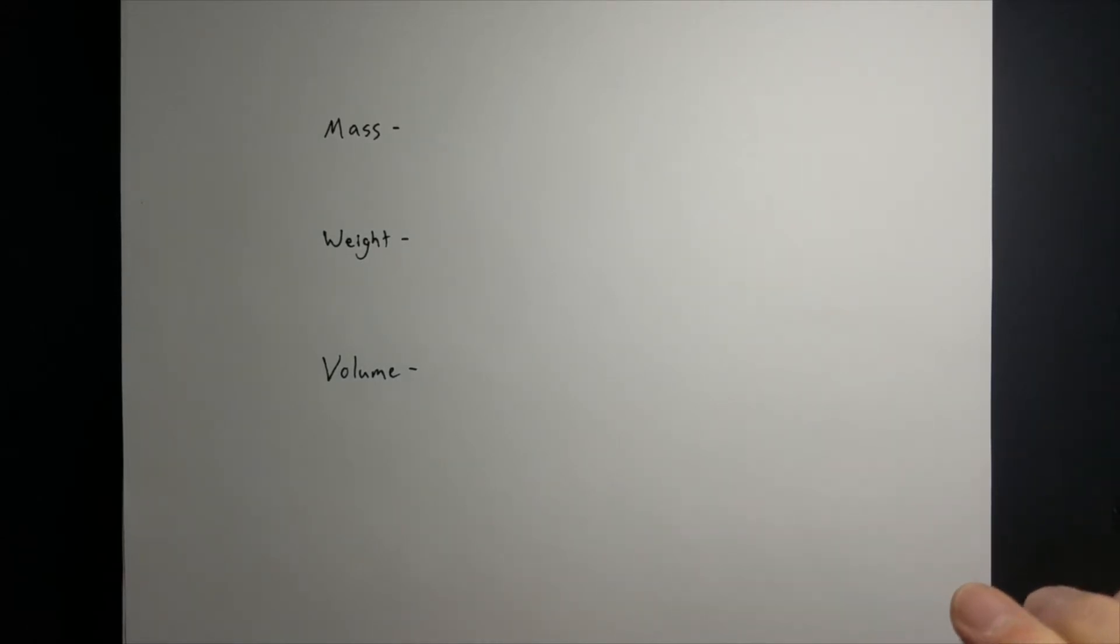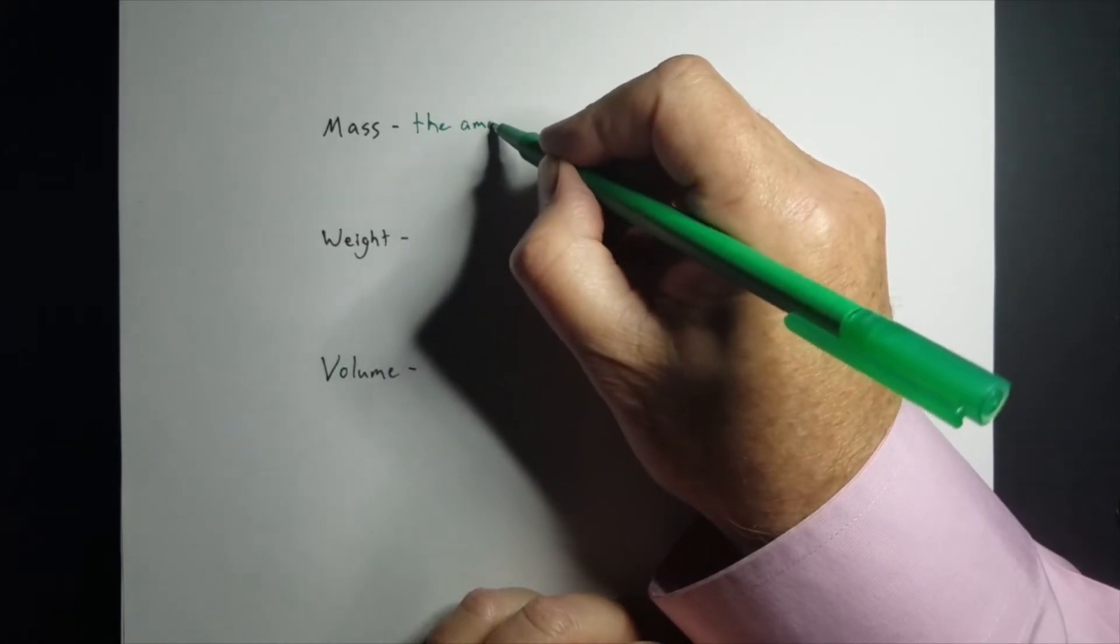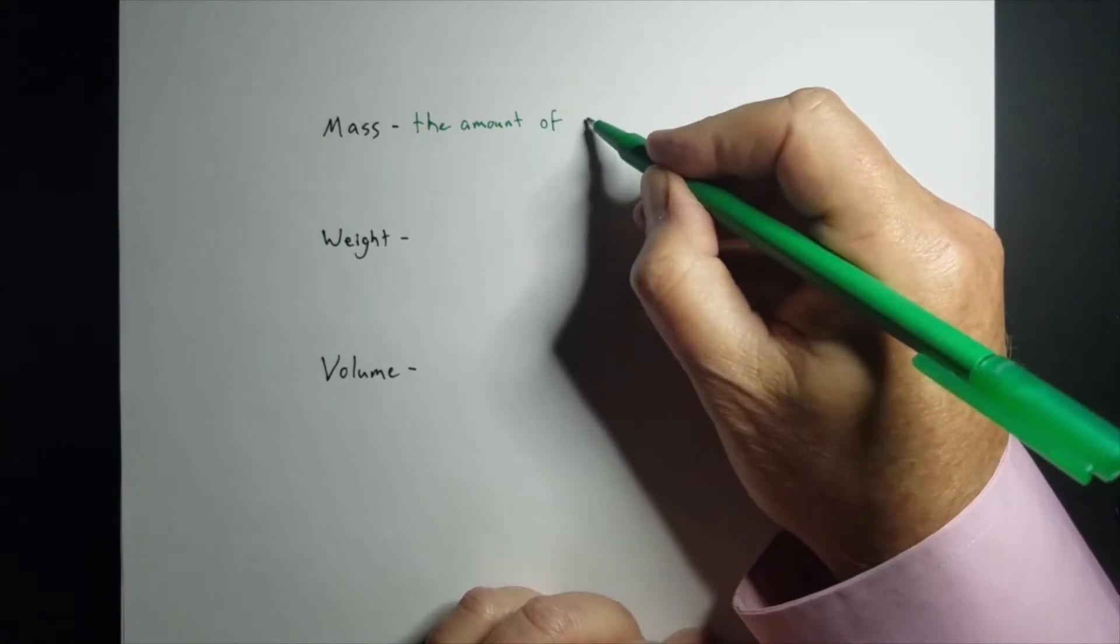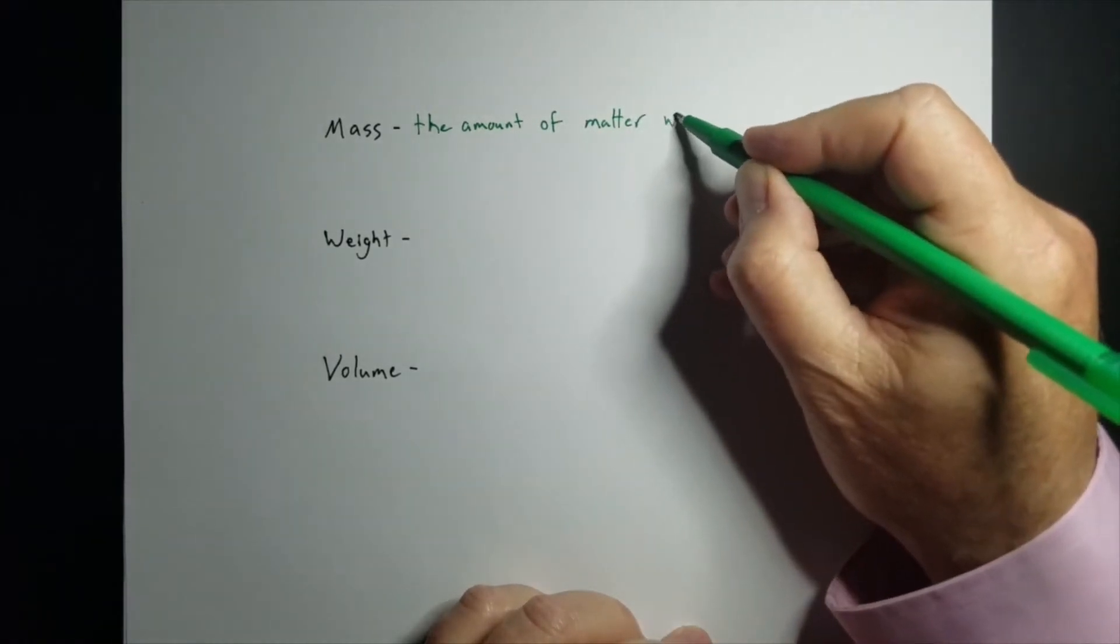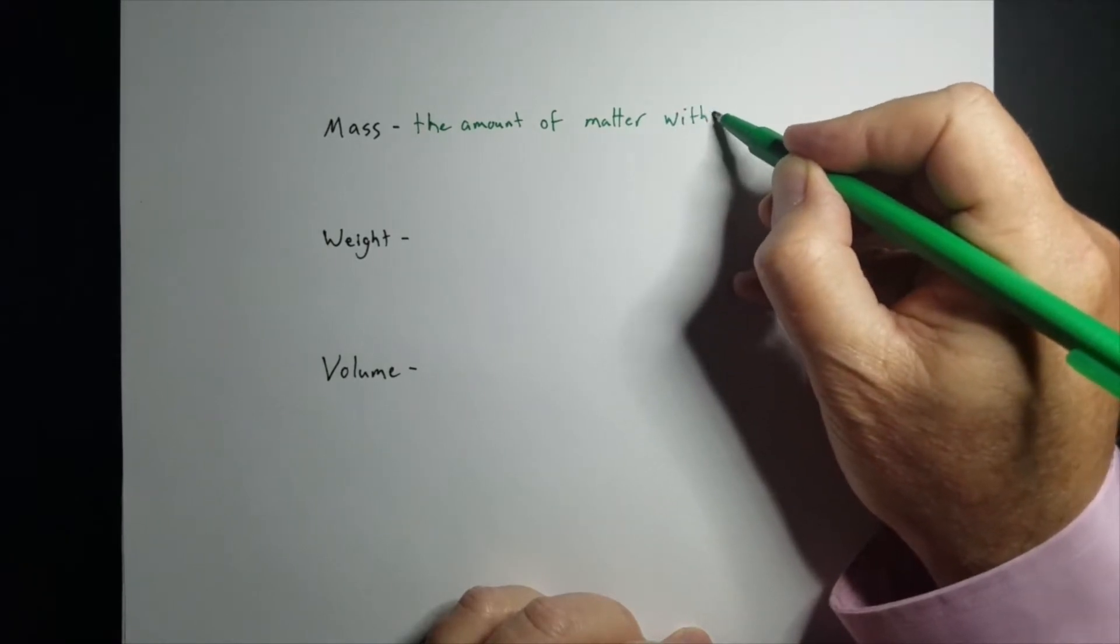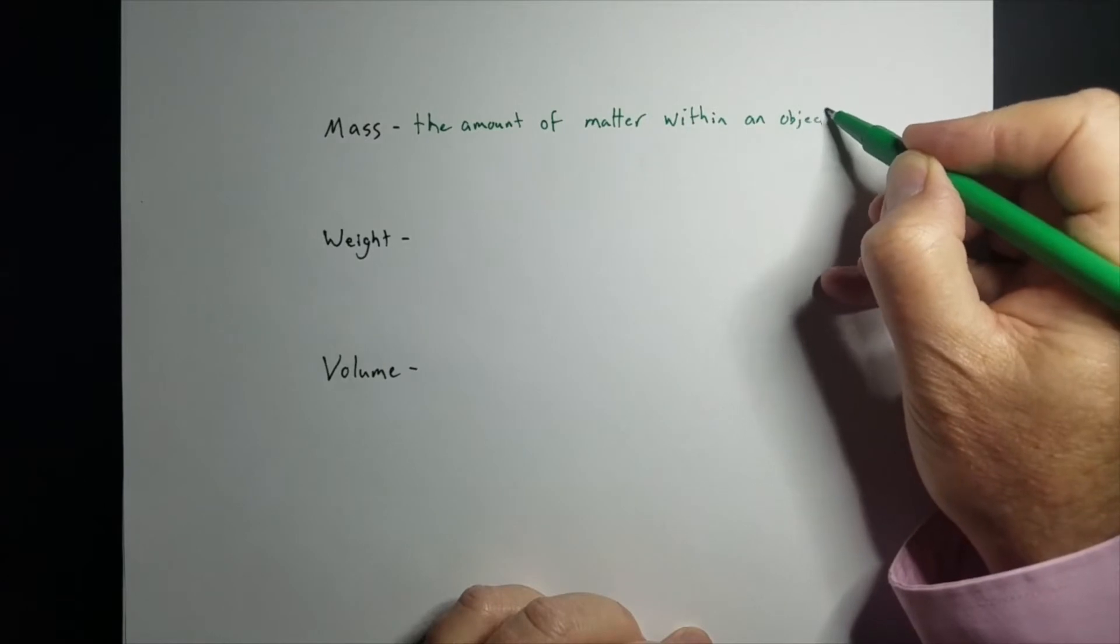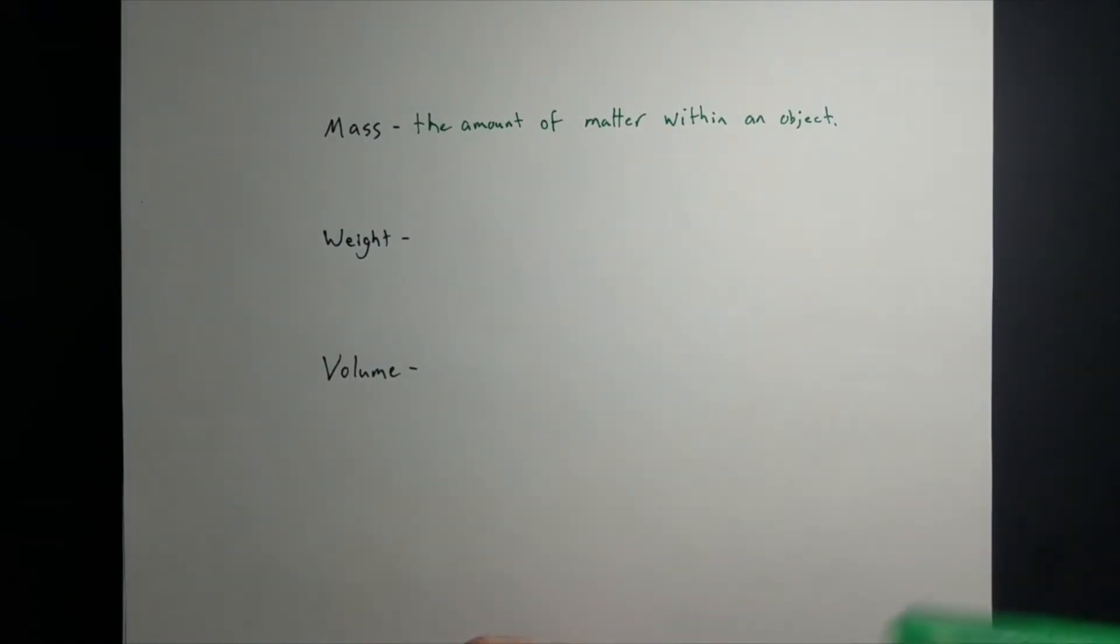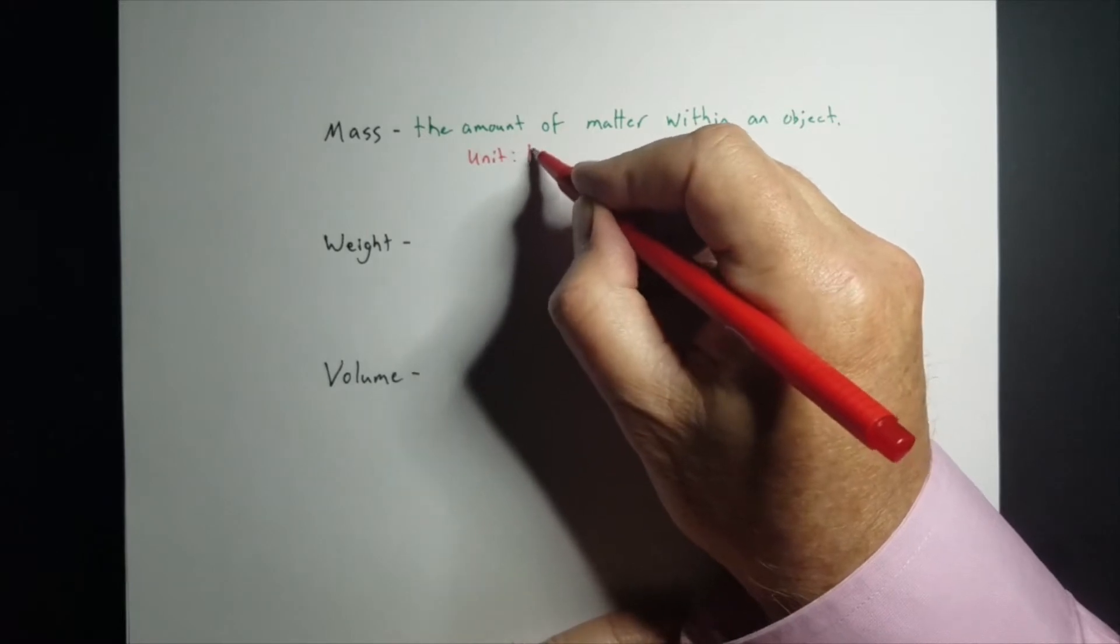Let's start off with mass, the amount or quantity of matter within an object. Now, we measure mass with kilograms. So the unit is a kilogram.